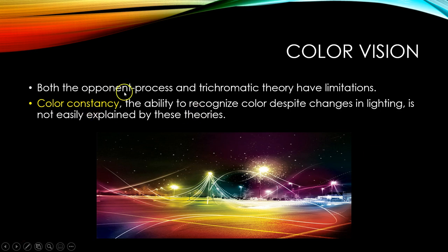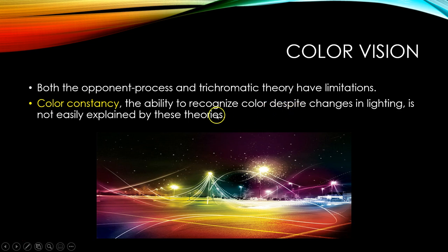Both the opponent process and trichromatic theories have limitations. Color constancy — the ability to recognize color despite changes in lighting — is not easily explained by these theories. So we need more theories, and we're still understanding and learning more about color vision.